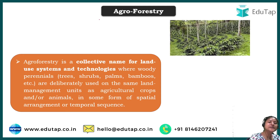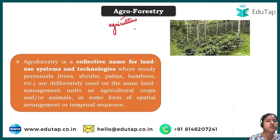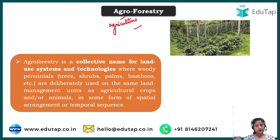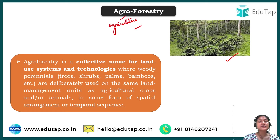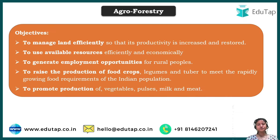The next concept is agroforestry. 'Agro' means agriculture, so agroforestry is agriculture combined with forestry. It refers to when we cultivate crops along with trees, or cultivate crops in areas where forests already exist. This is done for the proper management of land and to have proper productivity — since space left between trees can be used to cultivate crops, generating additional income.